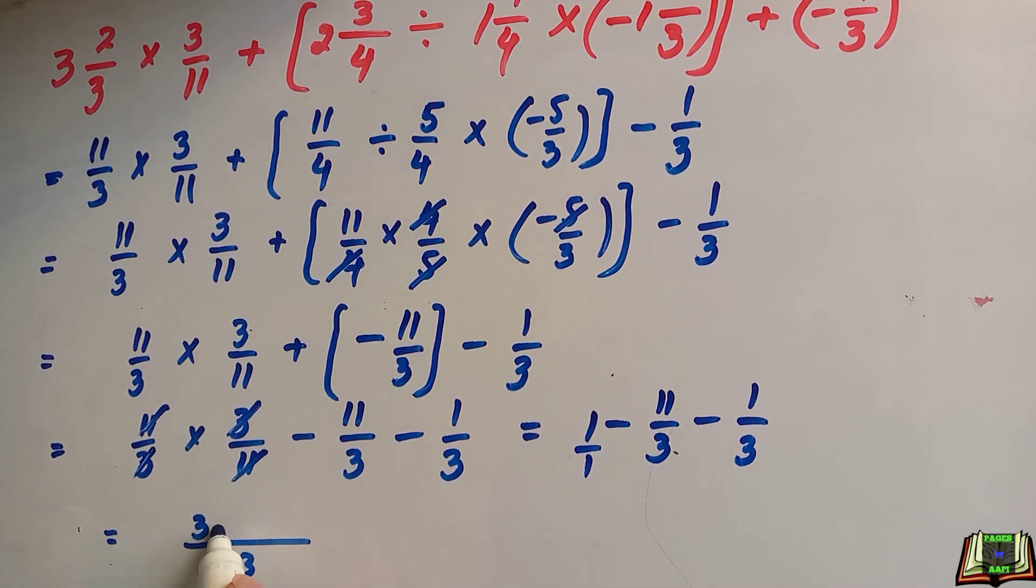1 times 3 is 3, 3 times 1 is 3 minus 11 minus 1. Minus 11 and minus 1 have the same sign, they will be added, and 3 will be subtracted, so minus 9 over 3. 3 times 1 is 3, 3 times 3 is 9, so minus 3 is the required answer.